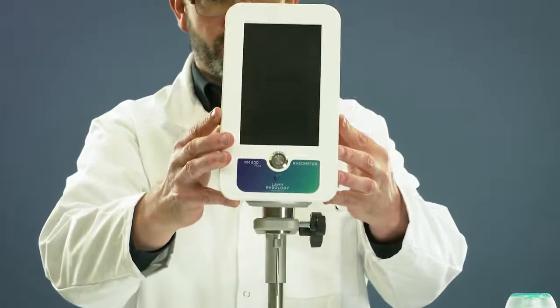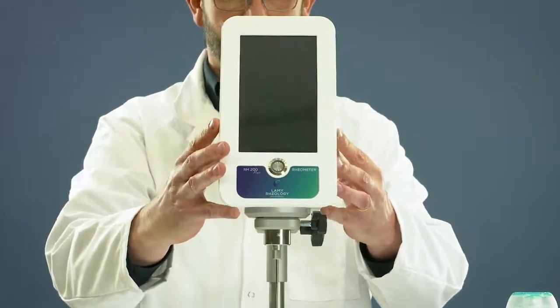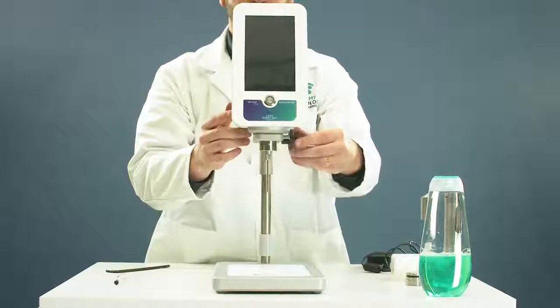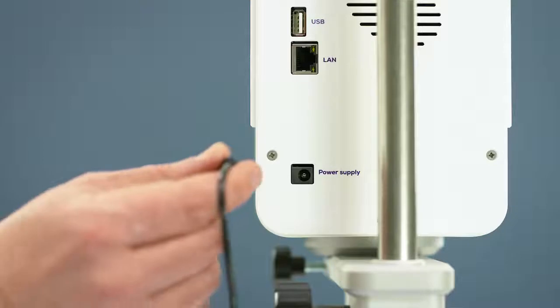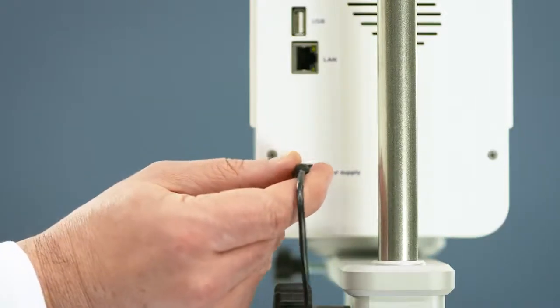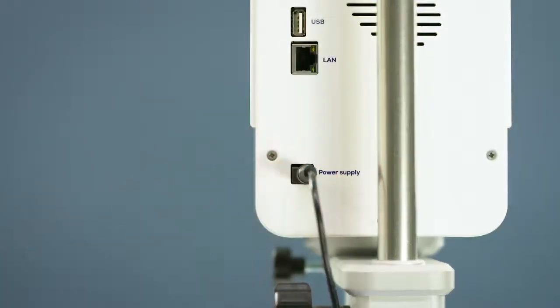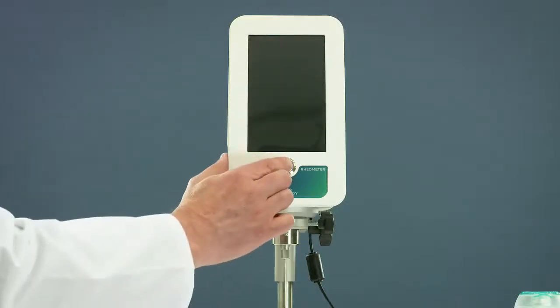Take the measuring head and install it on the arm, then lock the measuring head with the screw. Plug the power supply on the rear panel of RM200+ and switch on the viscometer.